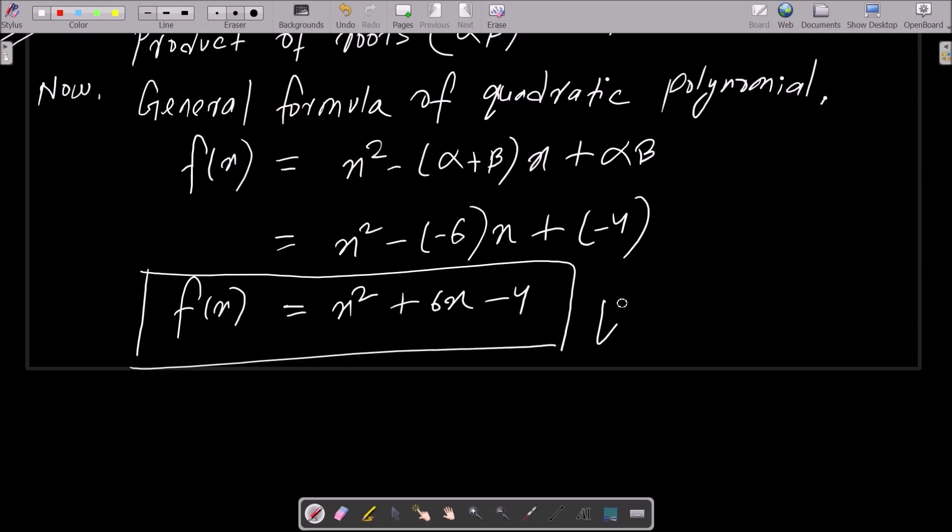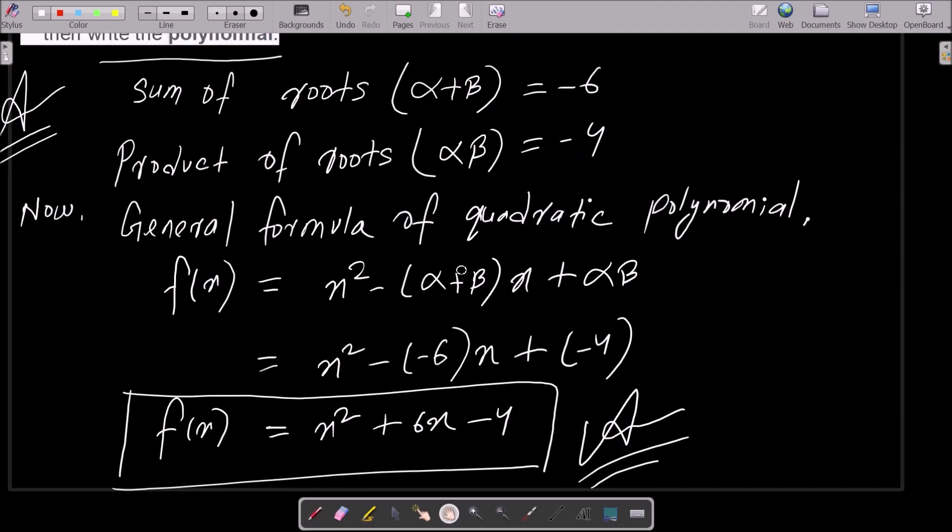So this is the polynomial. This is the polynomial using alpha and beta, sum of root and product of root. After putting that then you can get this one: x square plus 6x minus 4.